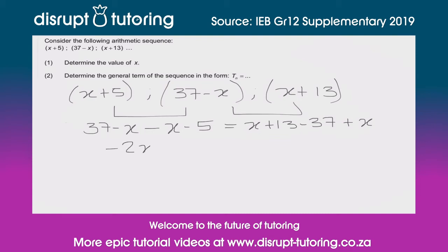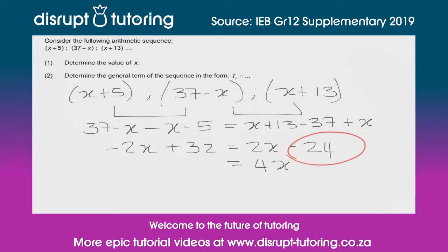It's fairly simple to solve for x. We've got negative 2x on this side, and then 37 minus 5 gives us 32. On the other side we've got 2x plus 13, giving us negative 24. Moving all x terms to one side gives us 4x on the right. Moving the negative 24 over gives us 56. Dividing both sides by 4 gives us x equals 14.